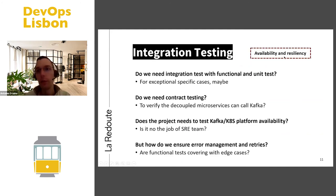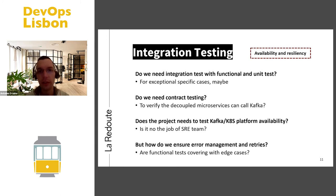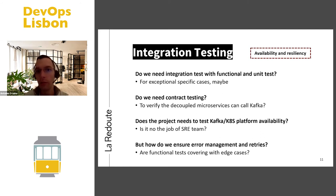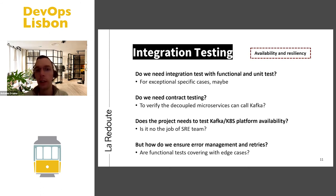For integration testing, we wanted to check mainly specific components, availability, and resiliency. In fact, we didn't need many integration tests — it was more by exception — because we use decoupled services with Kafka, so there's no contract testing needed between microservices. We only need integration tests when calling external services. The job of testing Kafka, Kubernetes, and platform availability is not the project team's job — it's the SRE team's job.